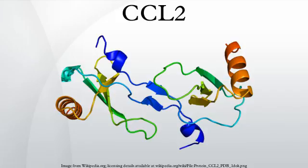CCL2 induces amylin expression through ERK1, JNK, AP1 and NF-κB related signaling pathways independent of CCR2. Amylin upregulation by CCL2 contributes to the elevation of plasma amylin and insulin resistance in obesity. Adipocytes secrete various adipokines that may be involved in the negative crosstalk between adipose tissue and skeletal muscle. CCL2 impairs insulin signaling in skeletal muscle cells via ERK1/2 activation at doses similar to its physiological plasma concentrations, but does not involve activation of the NF-κB pathway. CCL2 significantly reduced insulin-stimulated glucose uptake in myocytes, and may represent a molecular link in the negative crosstalk between adipose tissue and skeletal muscle.